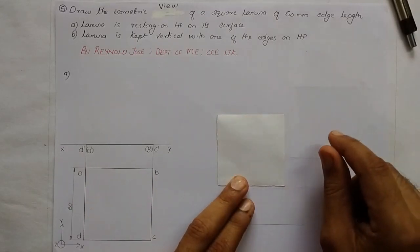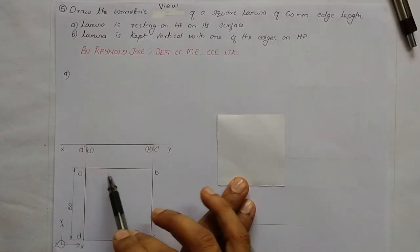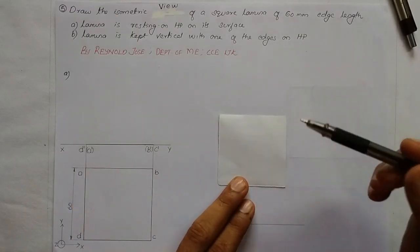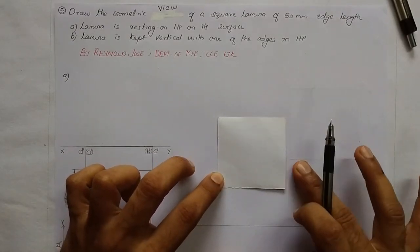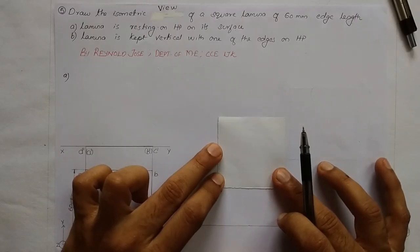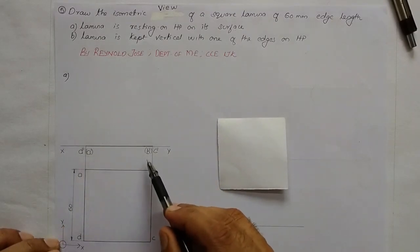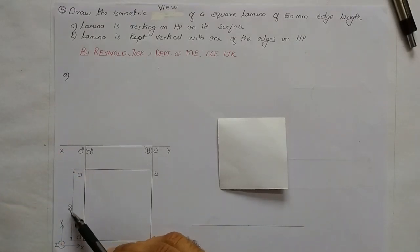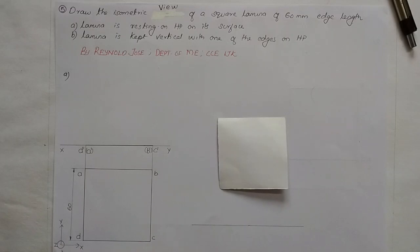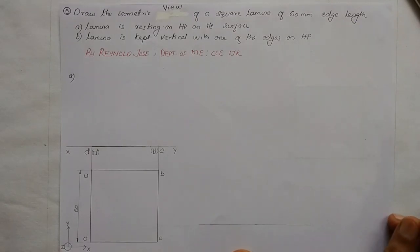No other conditions are mentioned such as edges parallel to HP or edges perpendicular to VP. We shall draw one of the edges parallel to the XY line. When observing this lamina from the top, the surface is resting on the horizontal plane, so in the top view it will be a square. When observing from the front, it will be a straight line on the XY line. The lamina has an edge length of 60 mm and no height. The XYZ directions are marked. We shall now draw the isometric view.